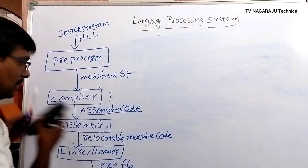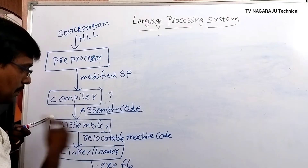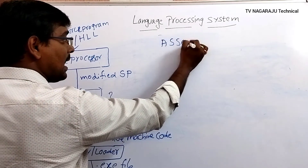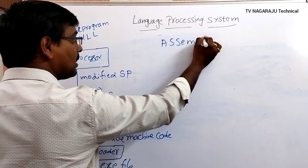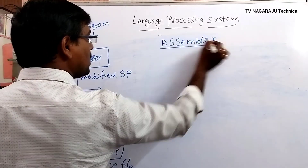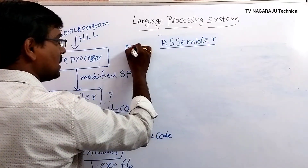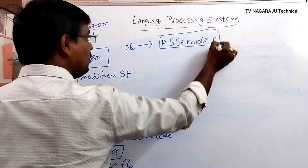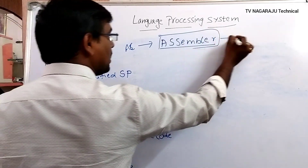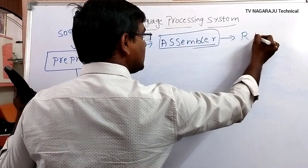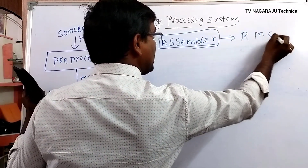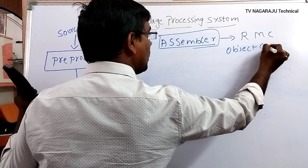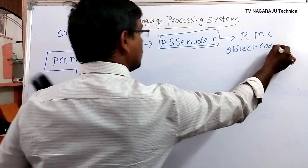The assembly code is passed as input to the assembler, which processes it and produces relocatable machine code, also called object code.